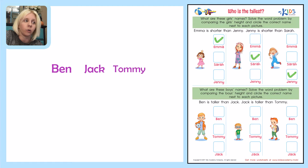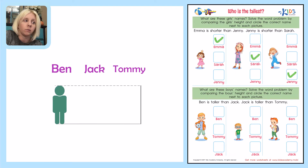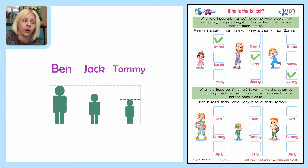Our directions say that Ben is taller than Jack, so I'm going to put a line right here. Ben is taller than Jack, so Jack is going to be down here because he's shorter. And then it says Jack is taller than Tommy, so Tommy has to be down here. Now the tallest is going to be Ben — T for tallest. The shortest is going to be Tommy — SH for shortest. And the one in the middle is going to be Jack.